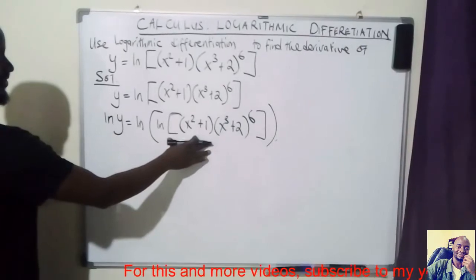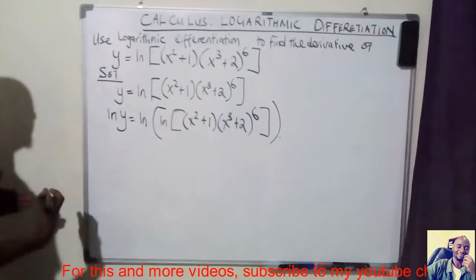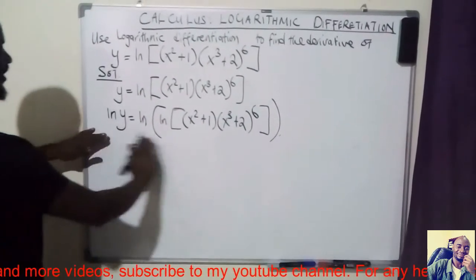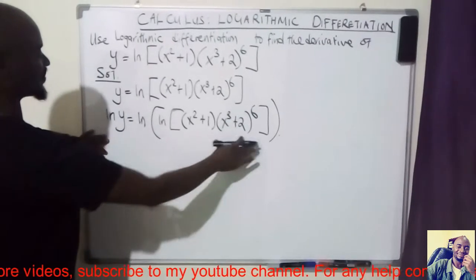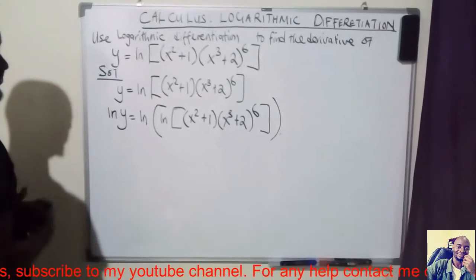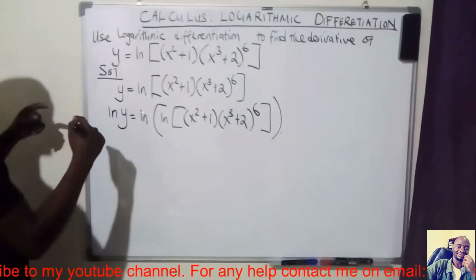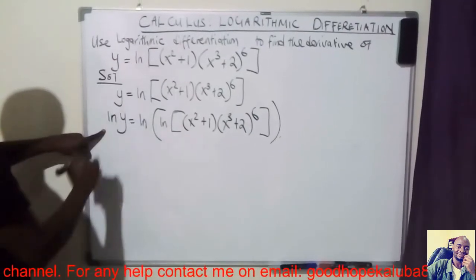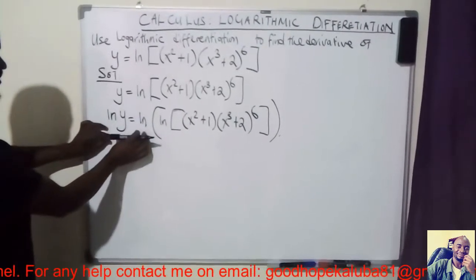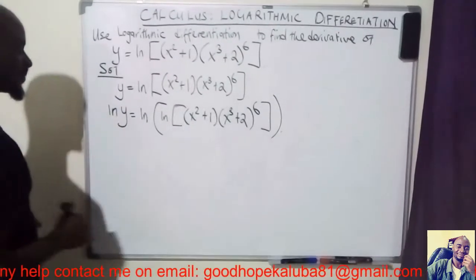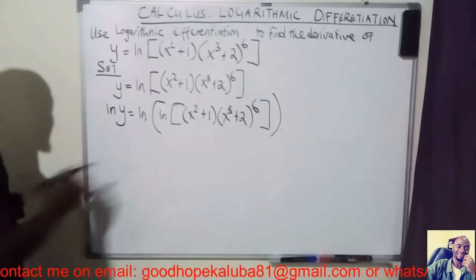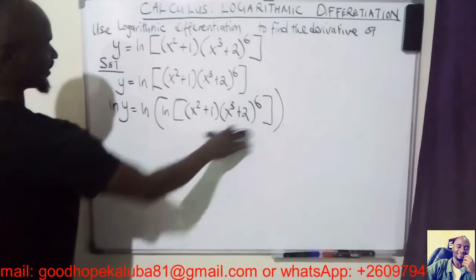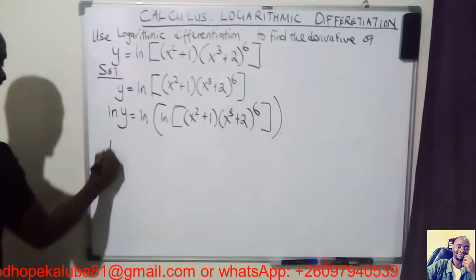At this point I need to expand what is inside here, so that when I come to use the chain rule it will be easy to work out. Before I differentiate I first have to simplify. The first step in logarithmic differentiation is to introduce ln on both sides, then simplify, and then differentiate accordingly.